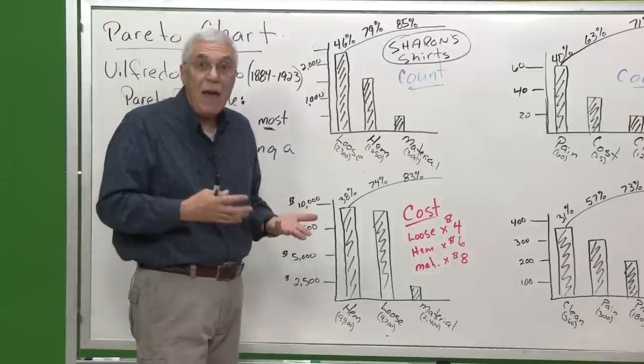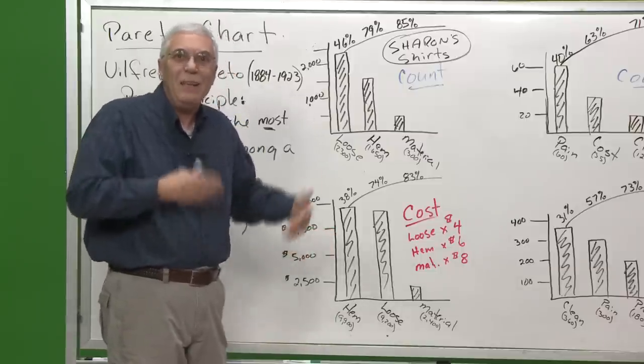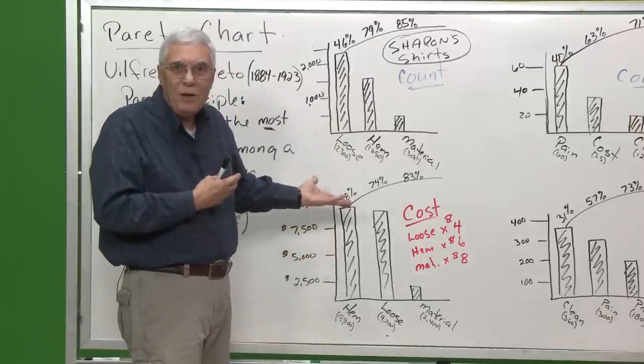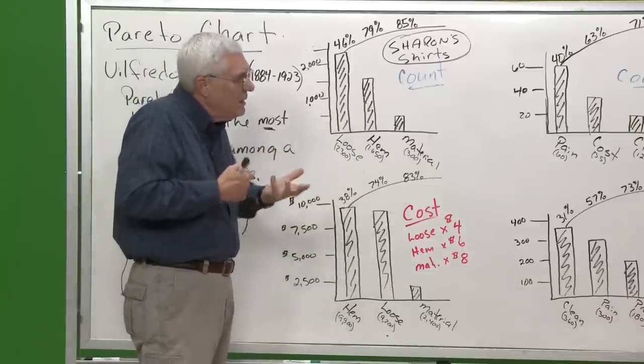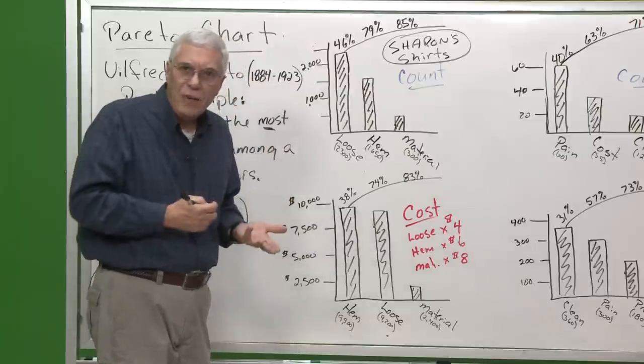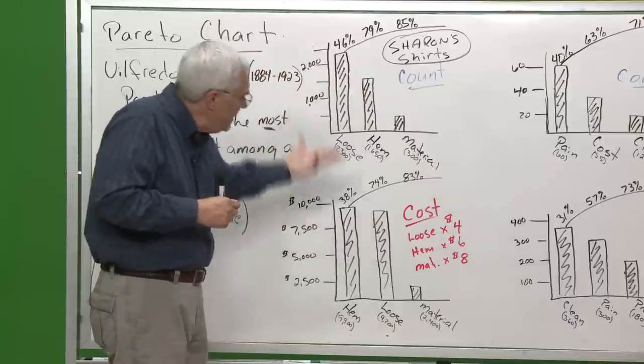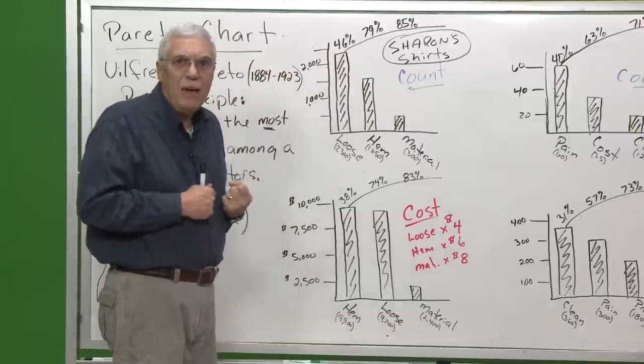So even though it wasn't a high dollar item, because we fixed it within a matter of about five seconds, it became the number one target. So again, it takes the people who understand the process and who can identify what the corrective action may be to decide what to do.